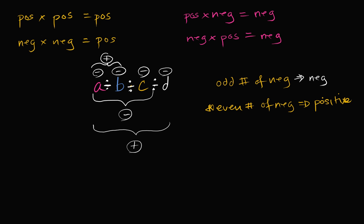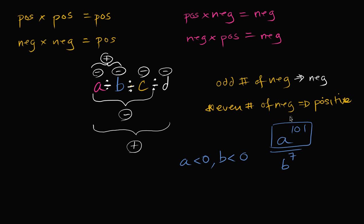Let me try another one. What if a is less than zero and b is also less than zero, and I have a to the 101st power divided by b to the seventh power — would this expression be positive, negative, or zero? Well, a to the 101st power has an odd number of negatives being multiplied, so it's going to be negative. And b to the seventh power also has an odd number of this negative number being multiplied, so that's negative too. But then you have a negative divided by a negative, which is going to be positive. So this expression is going to be positive. This is just a beginning, and in the next few videos we'll do examples that test our understanding of this.